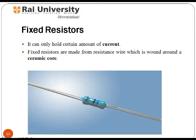A resistor may be classified into two types: fixed resistors and variable resistors. Resistors are a common element of electrical networks and electronic circuits. Fixed resistors are by far the most widely used type. They are used in electric circuits to set the right conditions. Their values are determined during the design phase and should never need to be changed. They are made from resistance wire wound around a ceramic core and can hold only a certain amount of current.